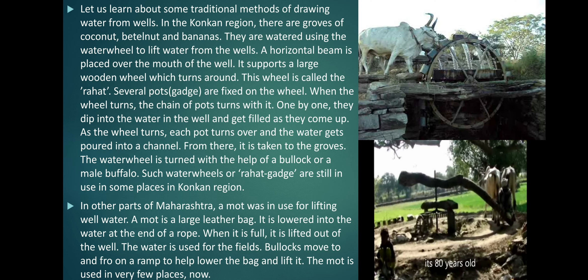Let us learn about some traditional methods of drawing water from wells. In the Konkan region there are groves of coconut, betel nut and bananas, which are watered using a water wheel to lift water from wells. A horizontal beam is placed over the mouth of the well and supports a large wooden wheel which turns around — this wheel is called the Rahat. Several pots, called gargi, are fixed on the wheel. When the wheel turns, the chain of pots turns with it; one by one they dip into the water in the well and get filled. As the wheel turns, each pot tips over and the water gets poured into a channel, from where it is taken to the groves. The water wheel is turned with the help of a bullock or a male buffalo. Such water wheels or rahat-gargi are still in use in some places in the Konkan region.